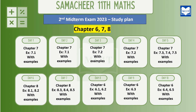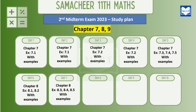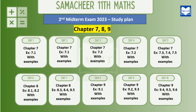Day 5: exercises 7.3 and 7.4. You can get a custom one extra day because you can cover 10 days. This is one study plan for chapters 7, 8, and 9. Day 8: chapter 9. Chapter 9, exercise 9.1 with examples. Day 9: chapter 9, exercises 9.2 and 9.3. Day 10: chapter 9, exercises 9.4, 9.5, and 9.6 with examples.